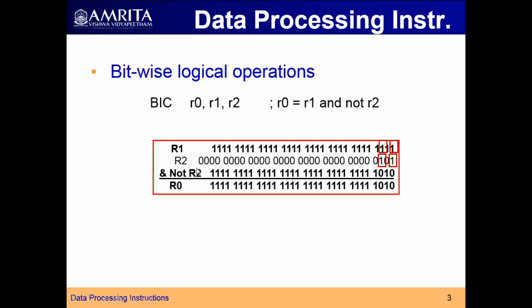In BIC, the operation is R1 AND NOT of R2. When you take NOT of R2, all 0s are replaced with 1s and 1s are replaced with 0s. So all bits will be 1, except whichever bit you need to clear — those two bits will be 0 after NOT of R2. When R1 is ANDed with NOT of R2, the corresponding bits you need to clear will be ANDed with 0, making them 0 in the result, which is stored in R0.